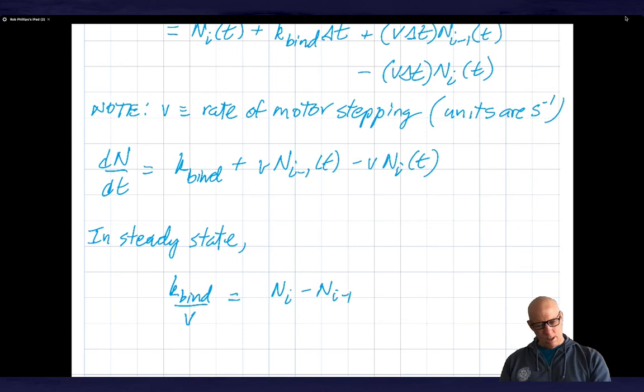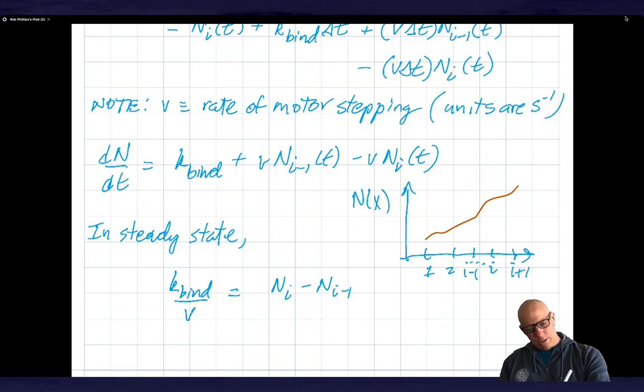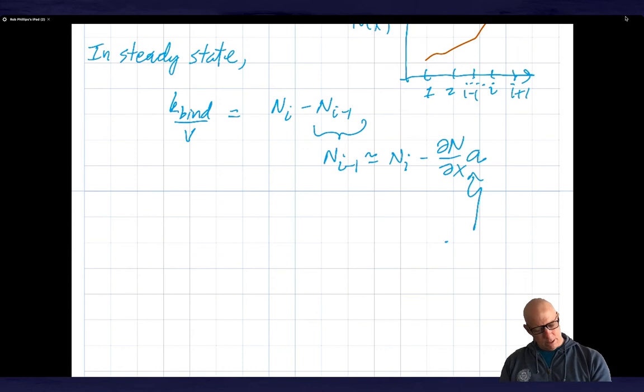And I can, you know, if I think of this is position. So here's, you know, this is one, two, out here I have i and i plus one and i minus one. And there's some, and I'm going to plot n of x. So I'm now going to treat this as like a continuous function. So, you know, I have something like this and what I want to do is I want to make the approximation that n_i minus one is approximately equal to n_i and then minus dn by dx times a, where a is the lattice parameter in this model.